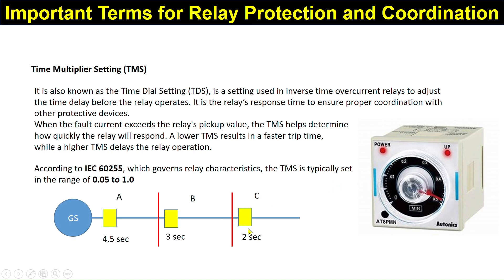This simple diagram shows a radial system. If a fault occurs in zone C, this relay will respond in 2 seconds. If that relay fails to respond, the next relay will wait and respond within 3 seconds. If that relay also fails, the upstream relay will operate in 4.57 seconds. In this way, the relays maintain coordination.